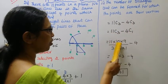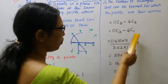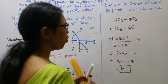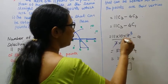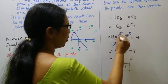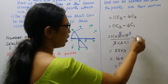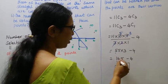11C3: 11 into 10 into 9 by 3 into 2 into 1, minus 4C1 which is 4. 3 threes are 9, 2 fives are 10, 11 fives are 55 into 3 minus 4. 55 into 3 is 165 minus 4.